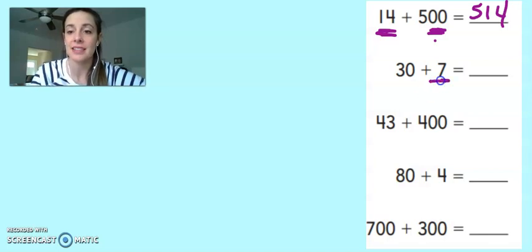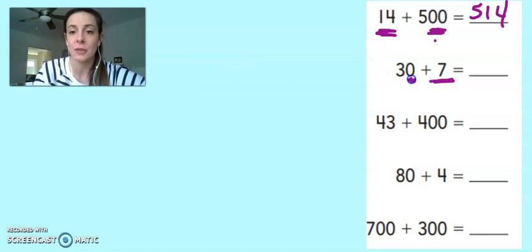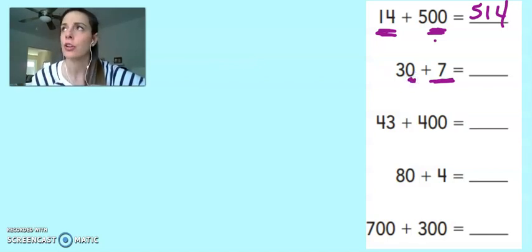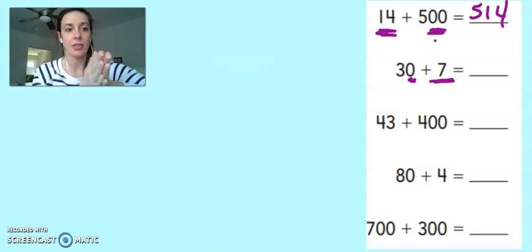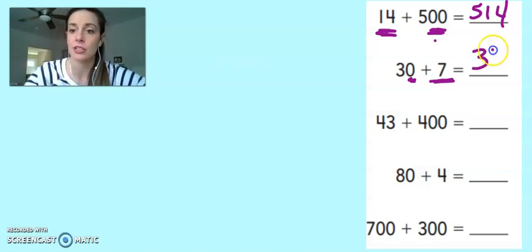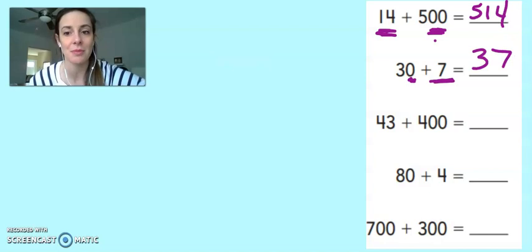Next I have 30 plus 7. 7 is in the ones place. It's just one digit. So I'm going to look at the ones place on my 30. 30 plus 7 - that sure sounds like expanded form too, doesn't it? 37. I can just push the two together to make one number.